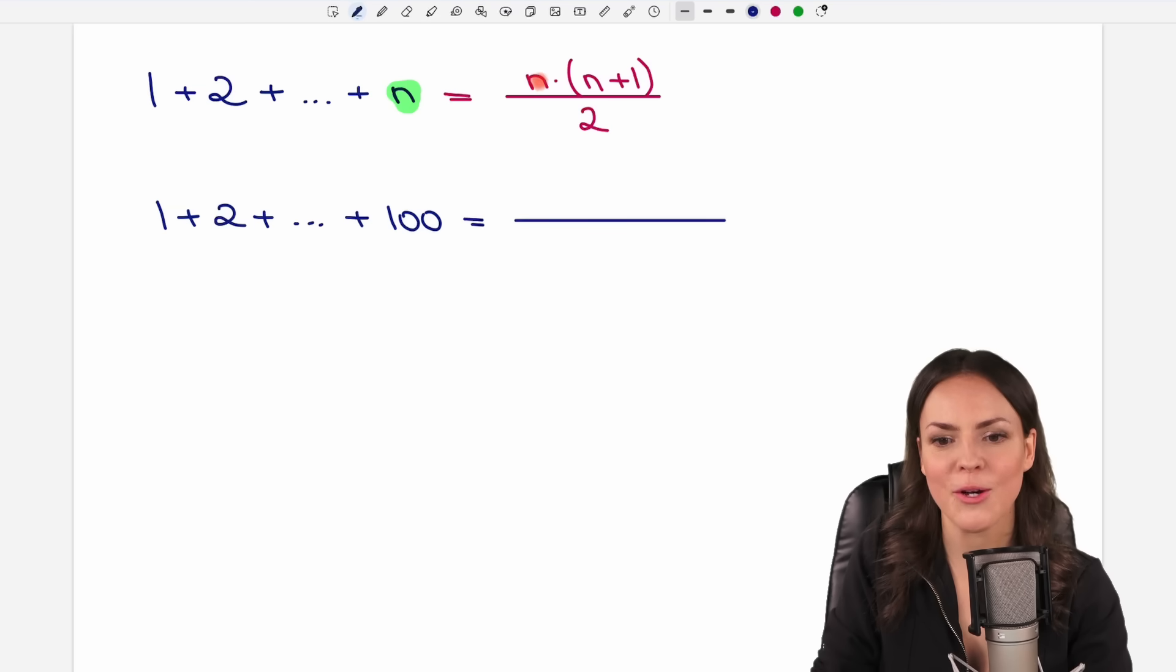So for our N, N in our case is 100. So we write the 100 in here. We multiply it by 100 plus 1. And then we divide it by 2. Let's simplify this. 100 divided by 2 equals 50.